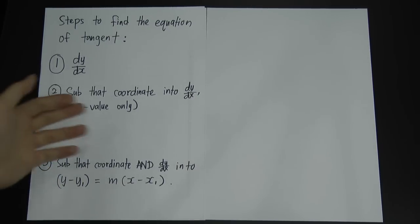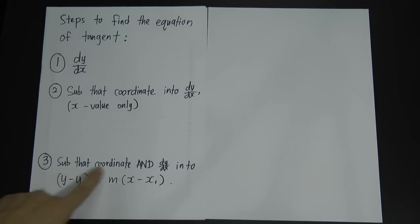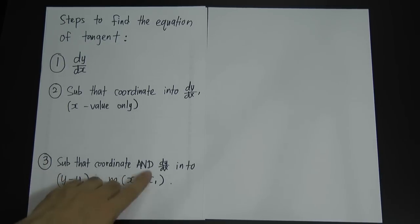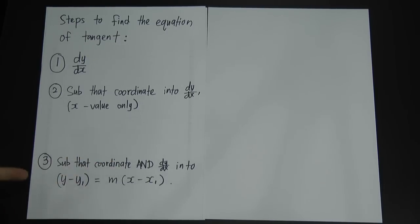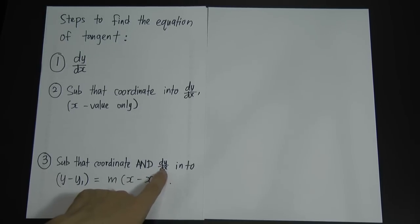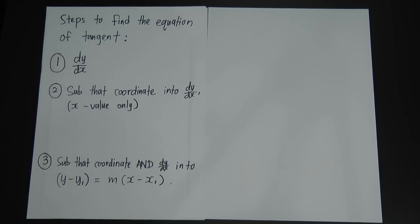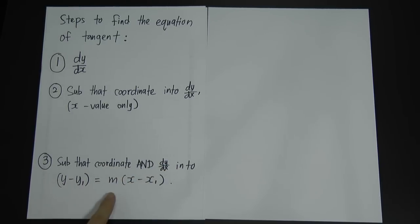The third step: after you substitute the x value into dy/dx and get a certain number, you substitute the coordinate of point A and the dy/dx value into the equation y minus y1 equals m times x minus x1. You have to understand that dy/dx means m here — the gradient — because when we differentiate y, we get the gradient of the curve. So the number you got for dy/dx is the same as m.